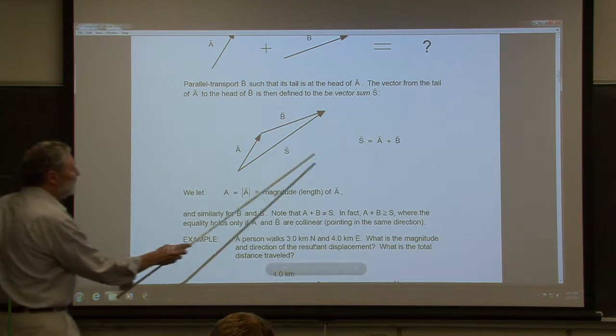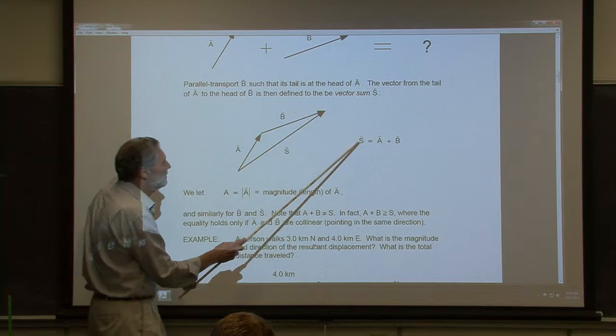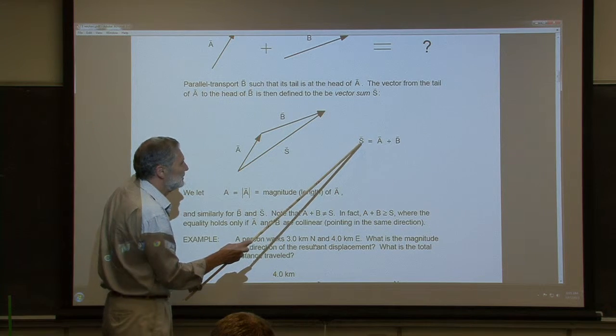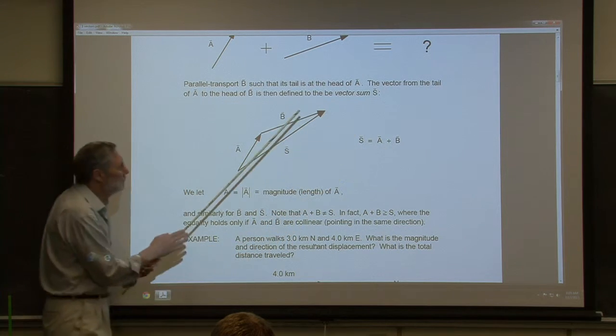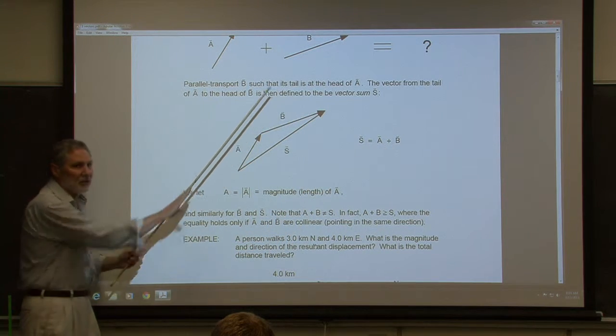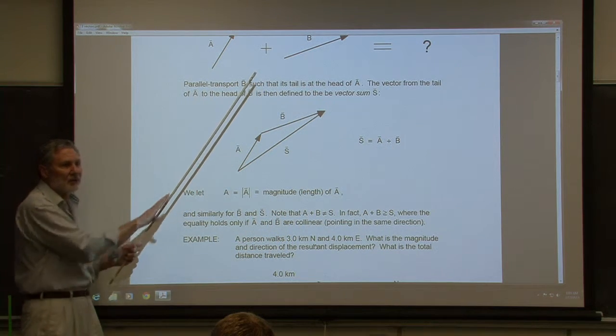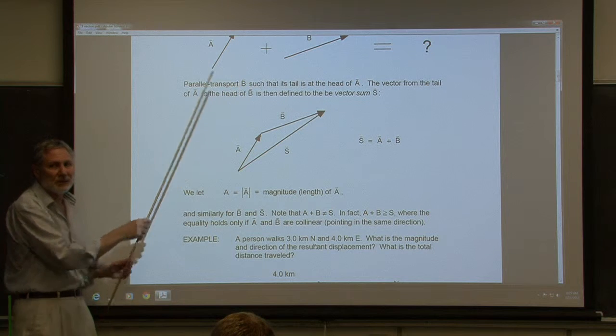The magnitude of S equals the sum of the magnitudes only when all the vectors are collinear — all pointing in the same direction.